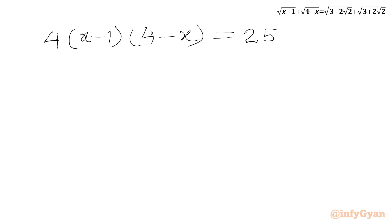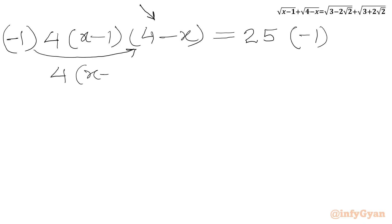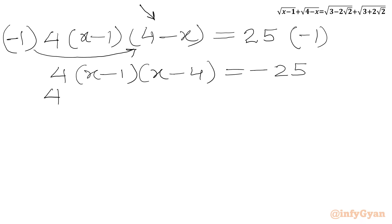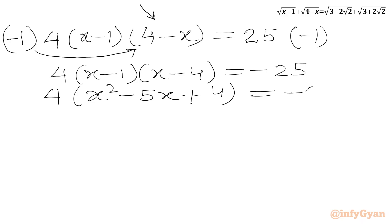Now here we have (4 minus x). We will multiply both sides by minus 1. So we write: 4 times (x minus 1)(x minus 4) equals minus 25. Now we multiply the two brackets: x squared minus 5x plus 4 equals minus 25 divided by 4.